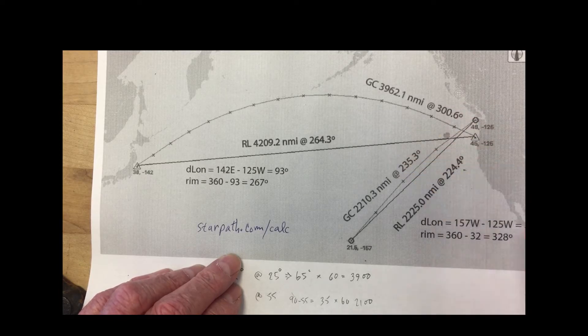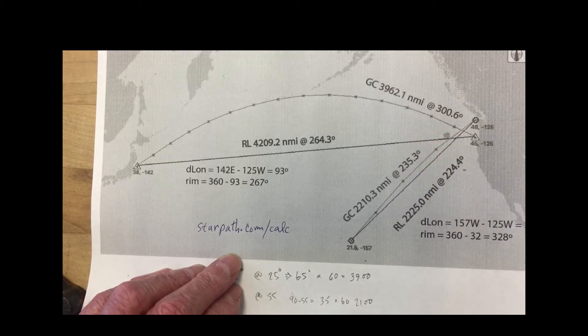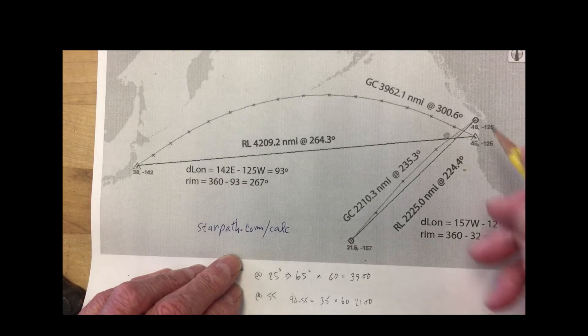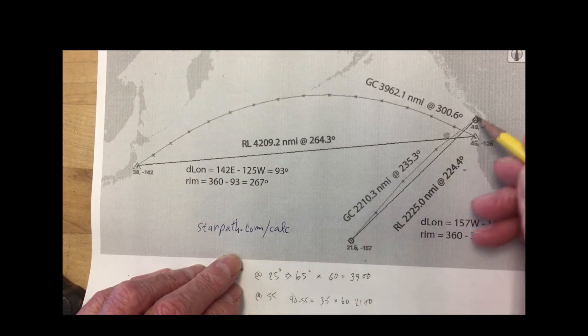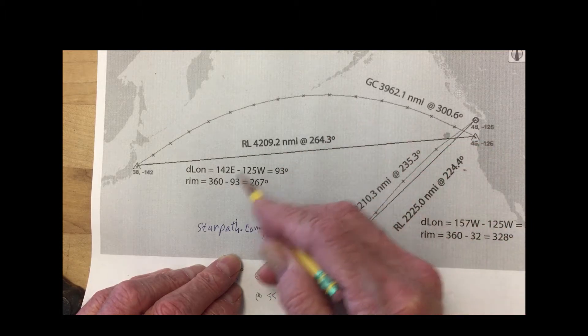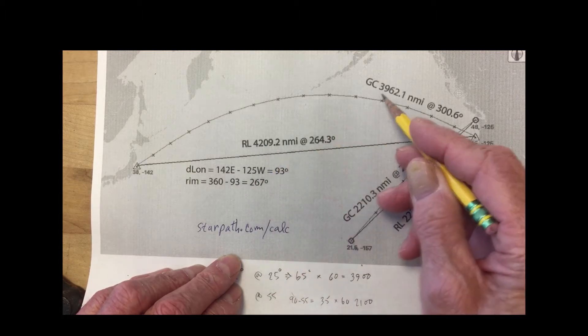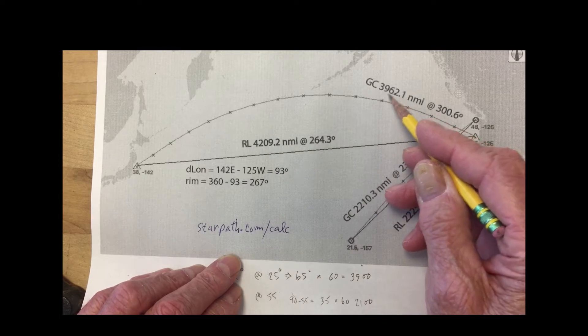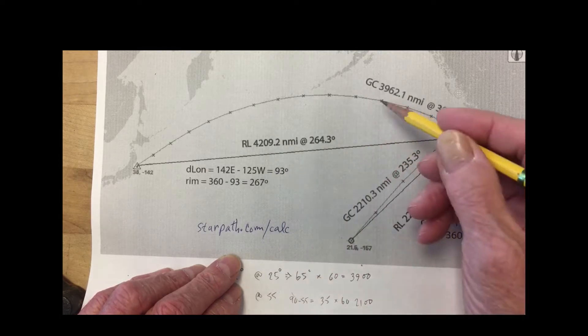So that's the answers we're trying to get from this Starfinder thing. The other one we'll do is from Niia Bay to Hawaii. Now the difference between the great circles, you see there's a big difference. There's 4200 miles, so there's 300 miles or something different here.